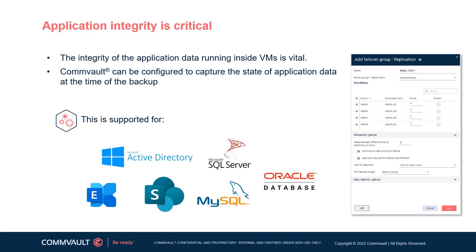The value of virtual machine replication without application-level consistency is questionable. With so-called crash-consistent copies, there is always a risk that an application is unrecoverable due to inconsistencies or corruption. Are customers really prepared to take that risk? Commvault's application-aware extension capability supplements the basic virtual machine protection methodologies for VMs hosting applications. Commvault automatically inserts an application agent inside guest VMs in order to manage the quiesce of the application or database activity, temporarily redirecting writes, so the application itself is in a consistent state of readiness for the VM-level backup operation.